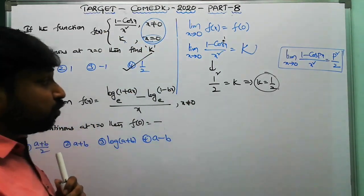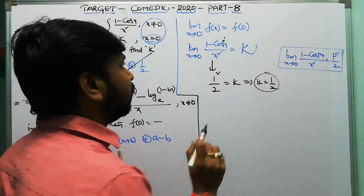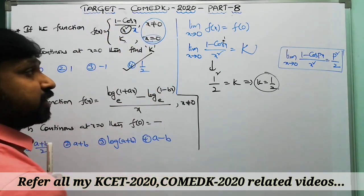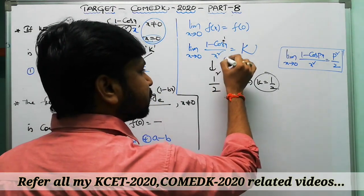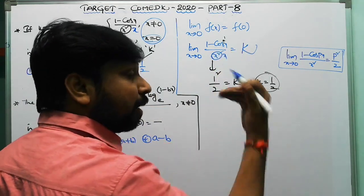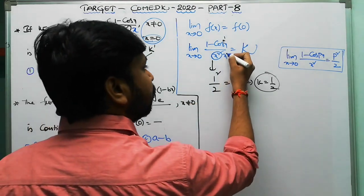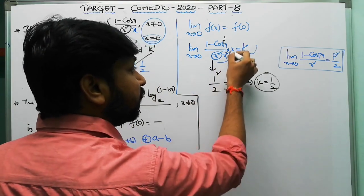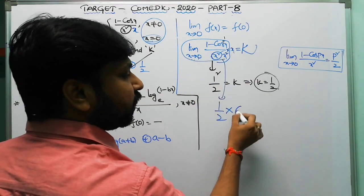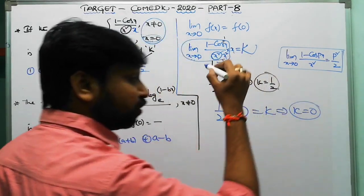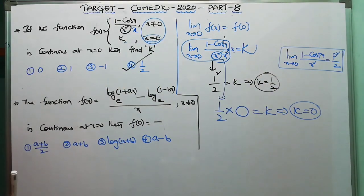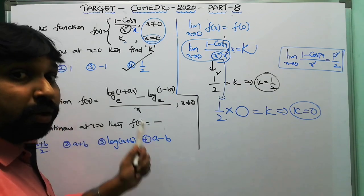The same question was given in one year with a small difference: instead of x², the denominator was just x. When the denominator is x, we cannot directly apply the formula. Multiply and divide by x to get (1-cosx)/x² · x. The first part gives 1/2, and limit x→0 of x = 0. So 1/2 × 0 = 0, giving k = 0. Be careful about which denominator is given.